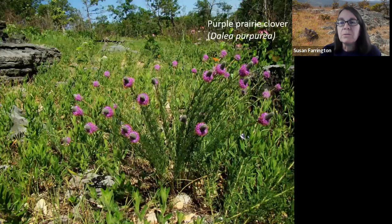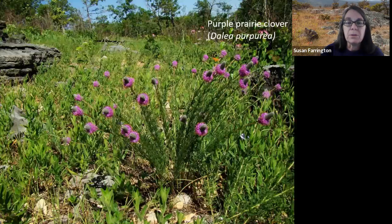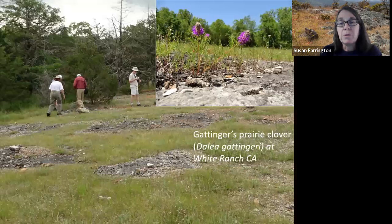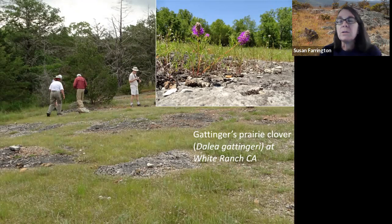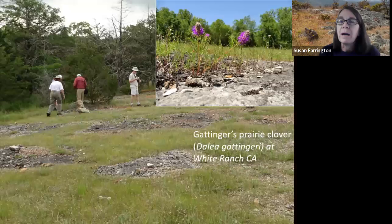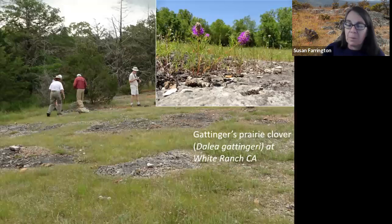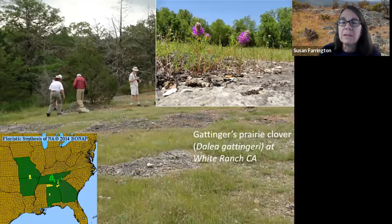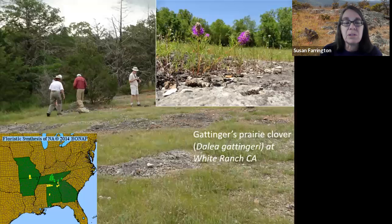Purple prairie clover is common on high-quality dolomite glades. Its leaves are remarkably fragrant when rubbed between your fingers. A very rare prairie clover is Dalea foliosa, or Gattinger's prairie clover, which blooms earlier than purple prairie clover and is found on flat, gravelly, almost pavement-like glades. In Missouri, it's only known from a very small area in Howell County, where these unusual glades resemble the Tennessee glades that are the heart of its distribution.